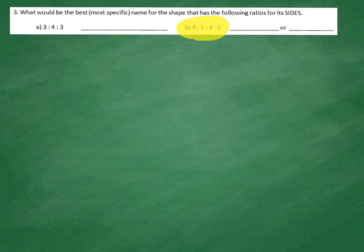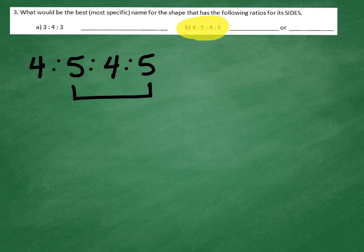I want to emphasize the order really matters. There's a 4, then a 5, then a 4, then a 5. What that means is these are opposite sides because of the order they come in.